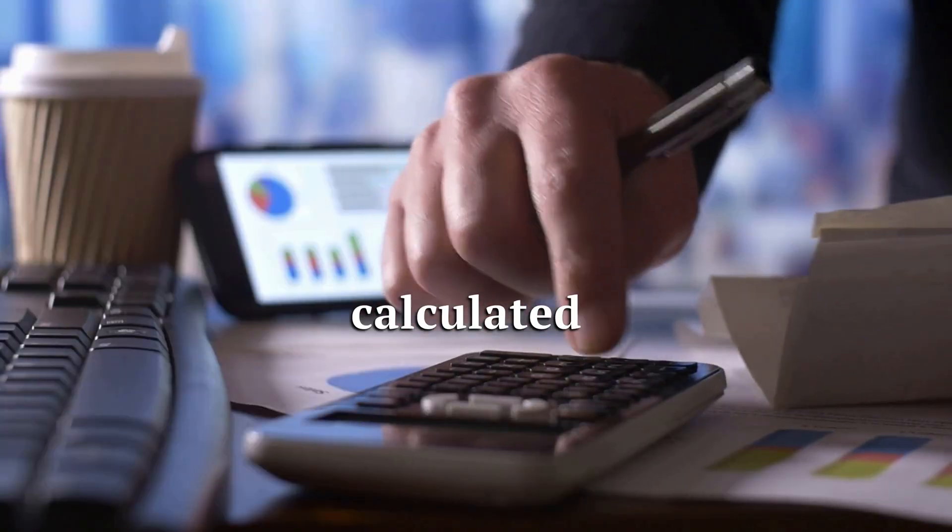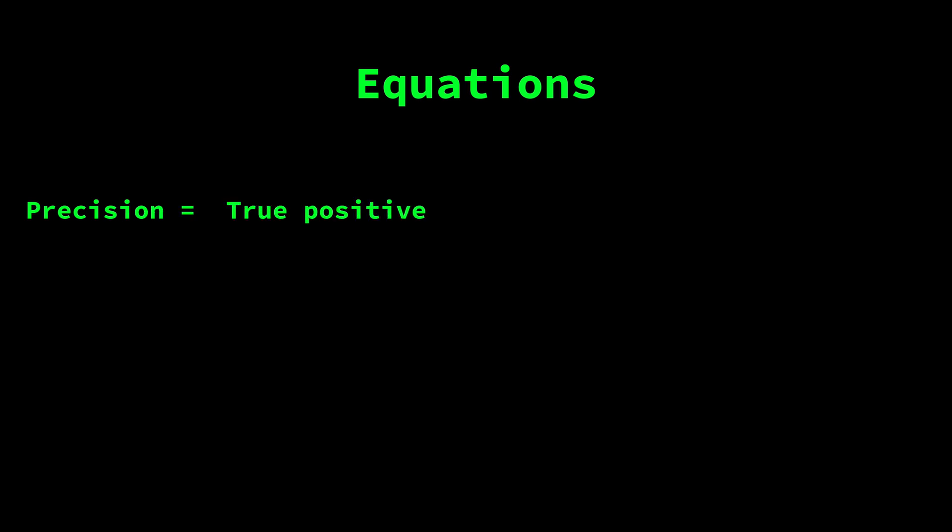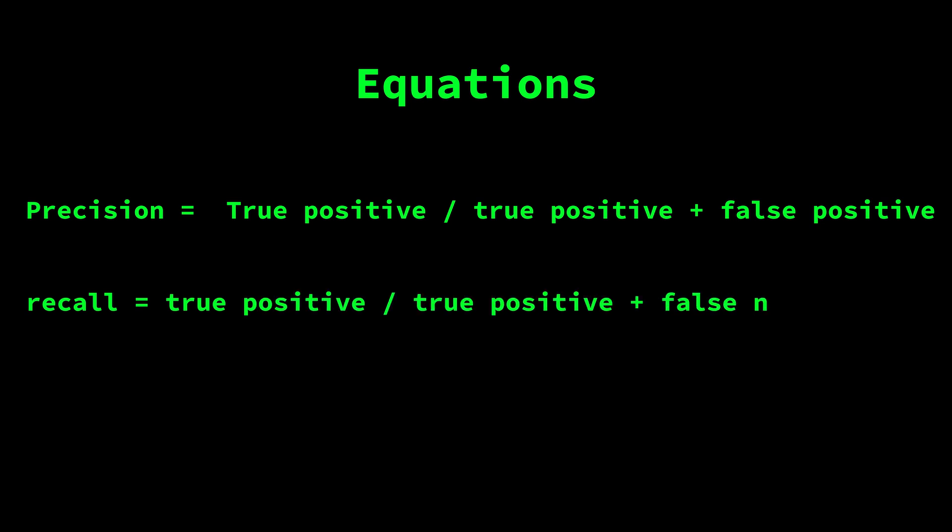The F1 score is calculated as the harmonic mean of precision and recall, which are defined as: precision equals true positive divided by true positive plus false positive, and recall equals true positive divided by true positive plus false negative. F1 score is then calculated as 2 times precision times recall, divided by precision plus recall.